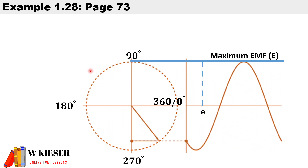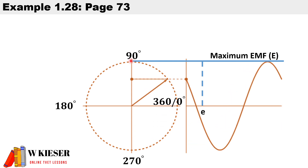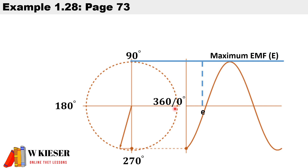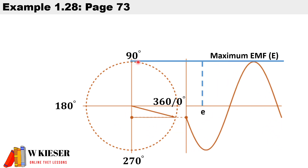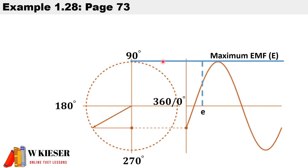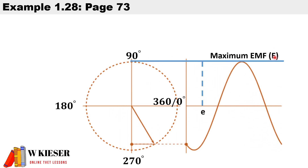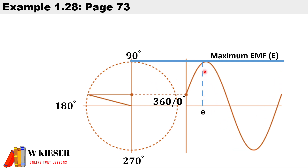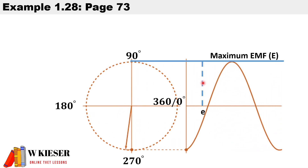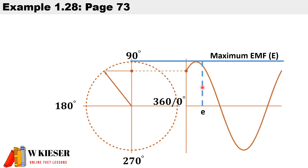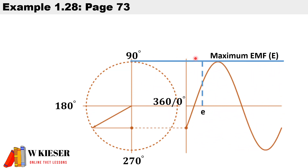This is example 1.28 from our textbook. Before we approach the calculation, I want to explain a basic principle. As this coil rotates 360 degrees it produces a sinusoidal waveform. Maximum EMF is produced at 90 degrees, represented by capital E, while the small e represents the instantaneous value which can be anywhere along the curve. At 90 degrees, when the coil cuts at right angles, it produces maximum EMF.